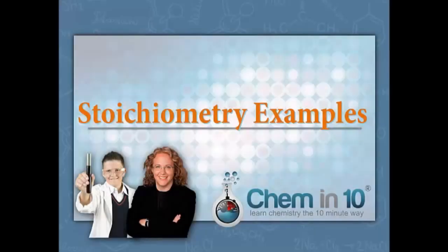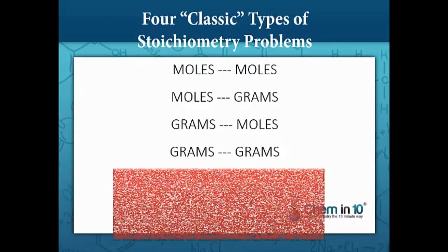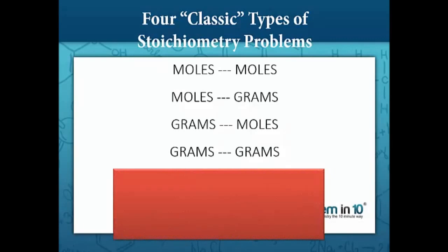This is Melanie Fine of Cheminten, and today I'm going to go over some stoichiometry examples. There are four classic types of stoichiometry problems: moles to moles, moles to grams, grams to moles, and grams to grams.